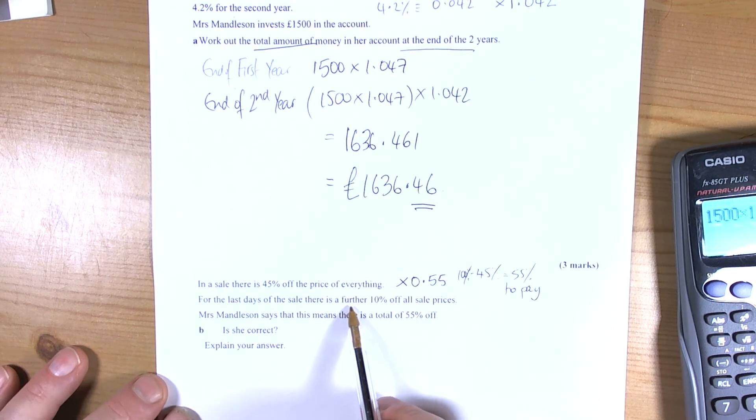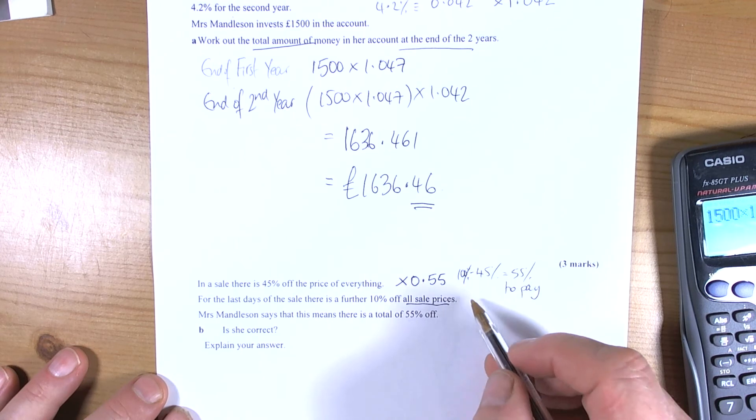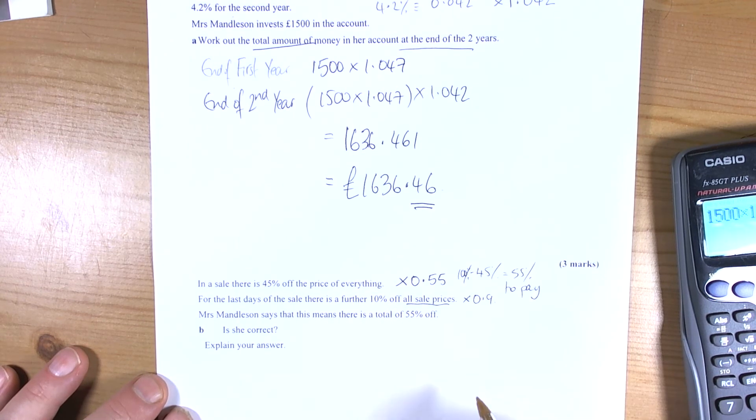For the last day of the sale there is a further 10% off all sale prices. So that's the same as multiplying by 0.9. Because you've got 90% left.